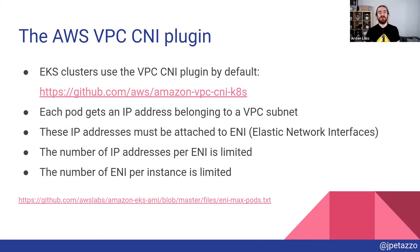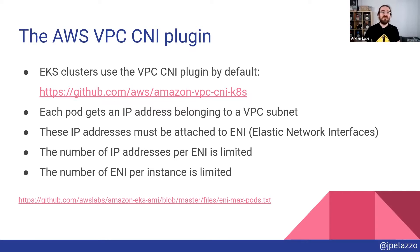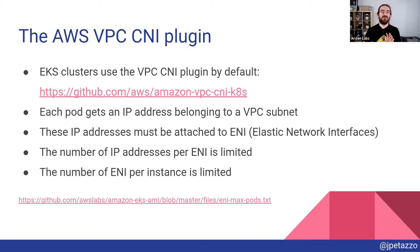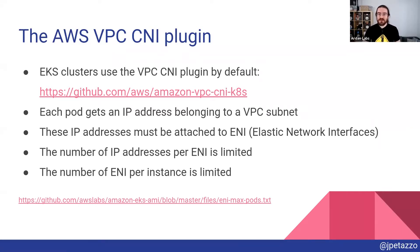When you deploy a cluster on EKS — that's Kubernetes by Amazon — by default it's going to use the AWS VPC CNI. There's a good tongue twister to expand that acronym: the Amazon Web Services Virtual Private Cloud Container Network Interface plugin. What's special about this is that it's going to allocate IP addresses in VPC subnets.